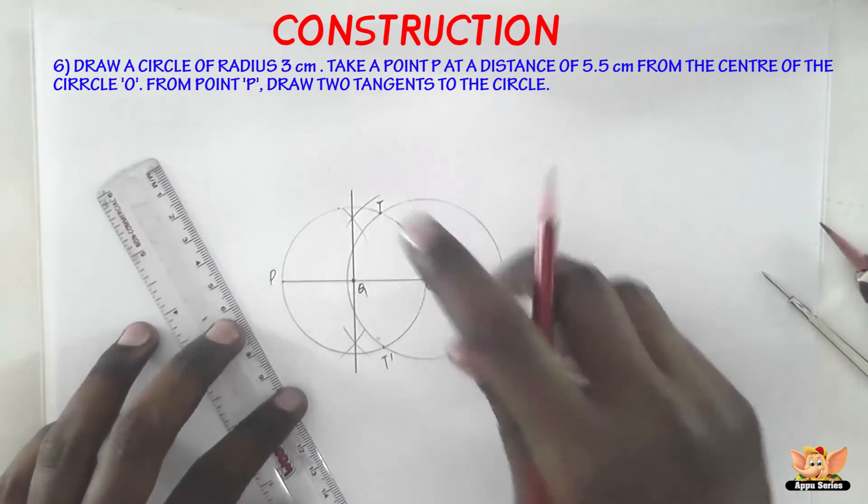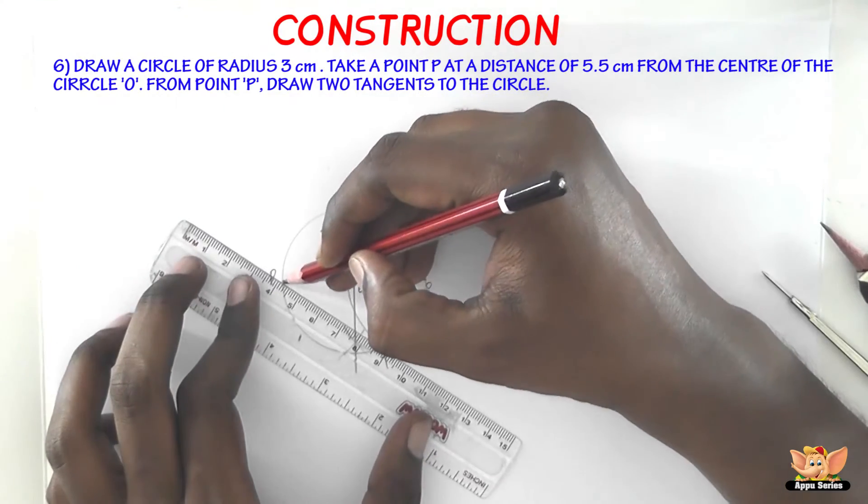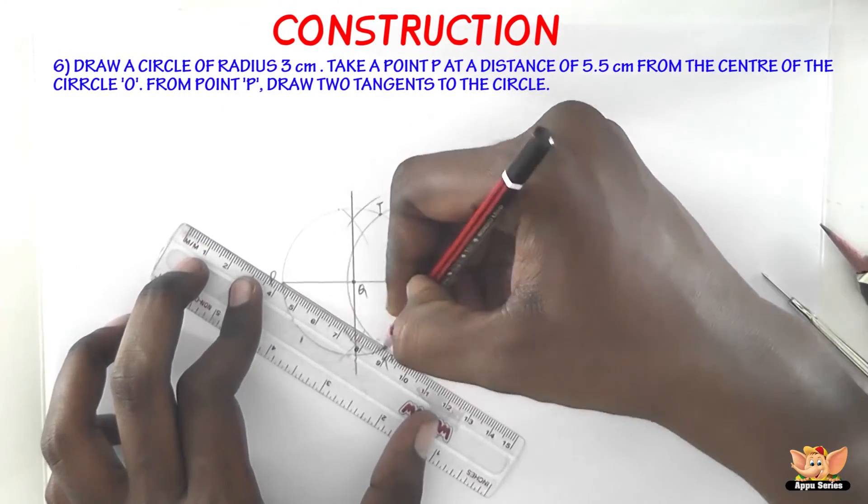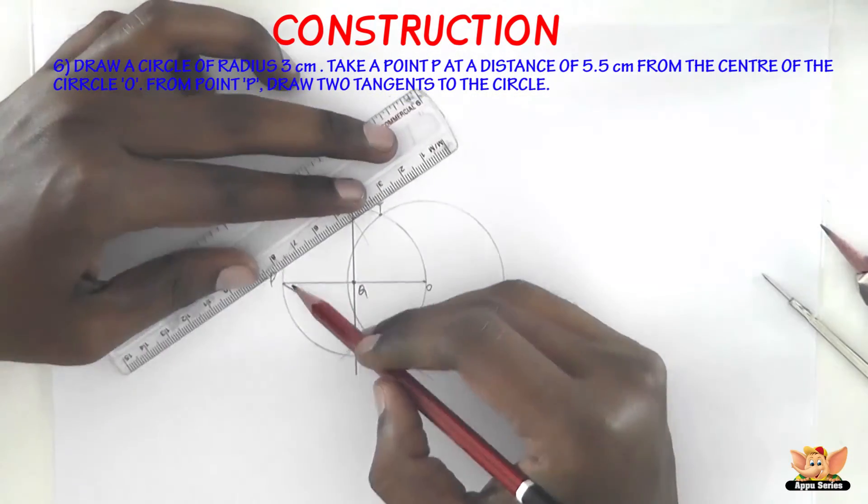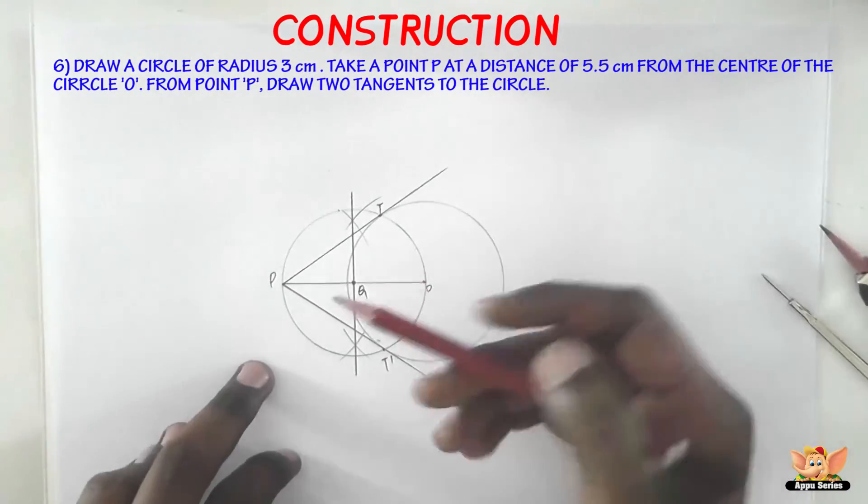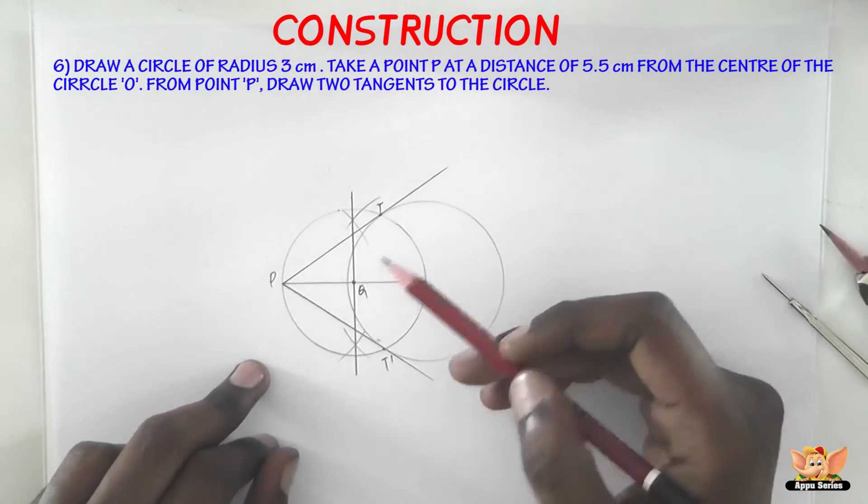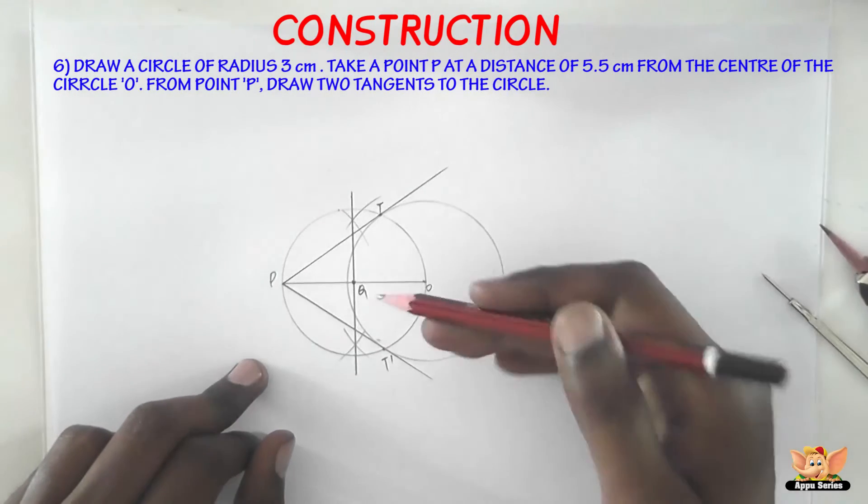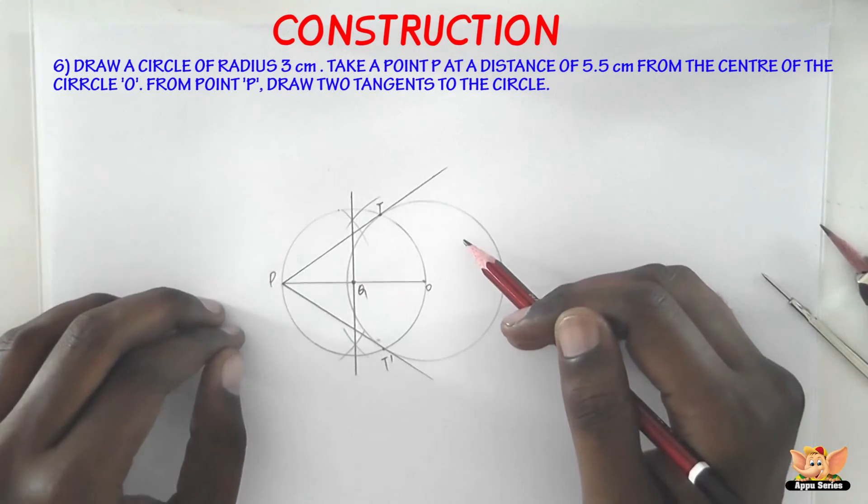Now all we have to do is just join T to P and T dash to P and we have the tangents from the external point. So the two tangents from an external point PT and PT dash are drawn here. So this is how we do it.